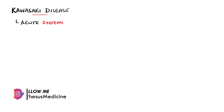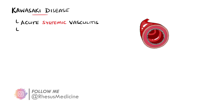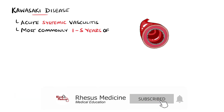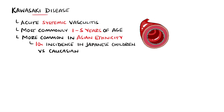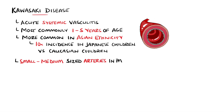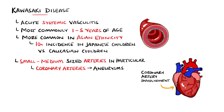Kawasaki disease is an acute systemic vasculitis seen most commonly in children between one and five years of age. There is a slight predominance in males and it is seen more commonly in Asian ethnicities, with Japanese children quoted as having an incidence 10 times greater than Caucasian children. The vessels affected are small to medium-sized arteries, which includes the coronary arteries. This often generates coronary artery aneurysms, which is the most significant manifestation of Kawasaki disease.